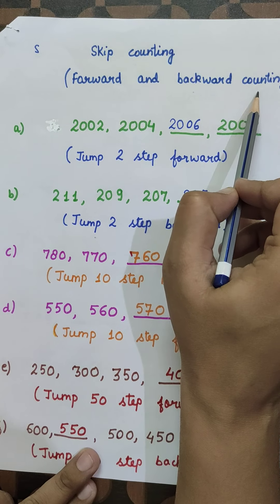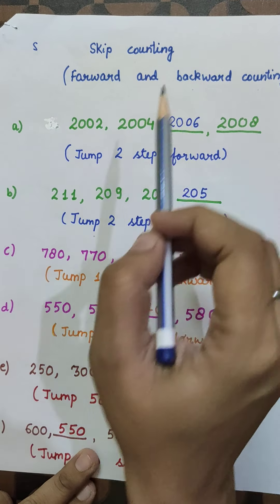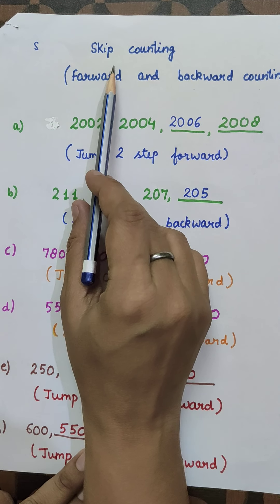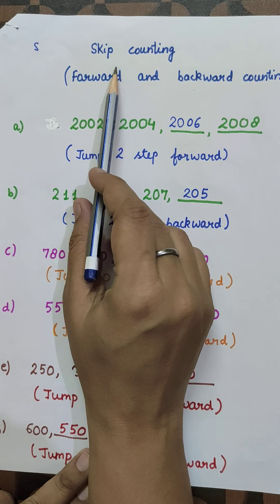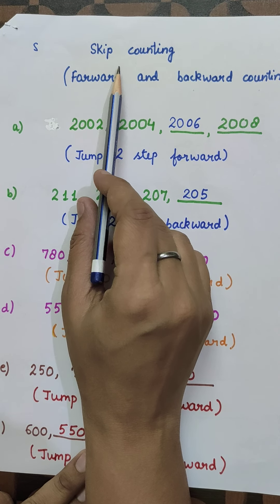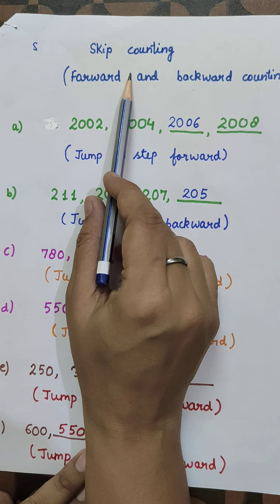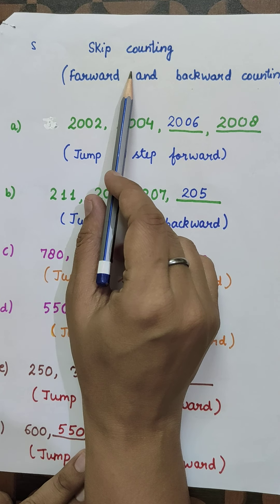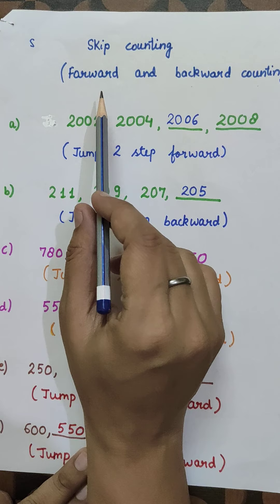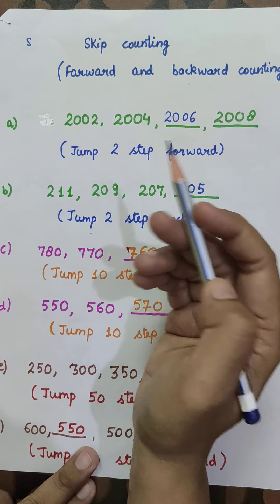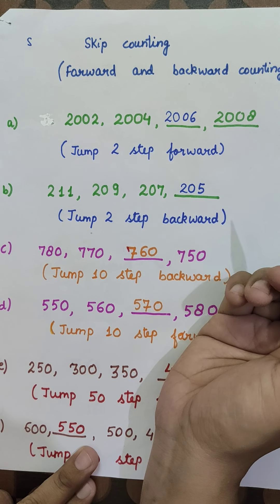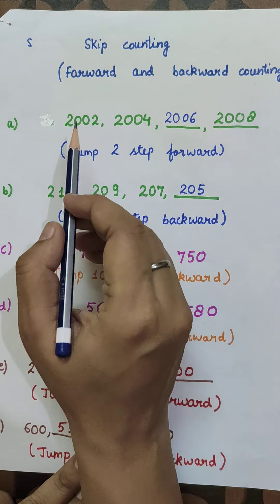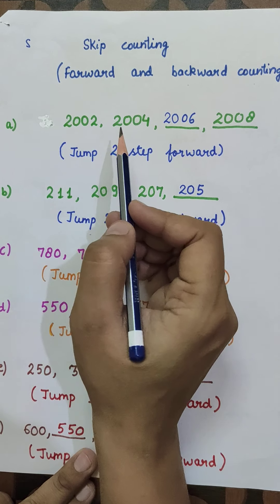Now we are coming to the next topic: skip counting — forward and backward counting. Skip counting can be defined as the method of counting forward by numbers other than one. To skip count, we keep adding the same number each time to the previous number.